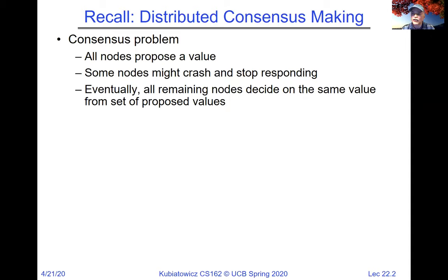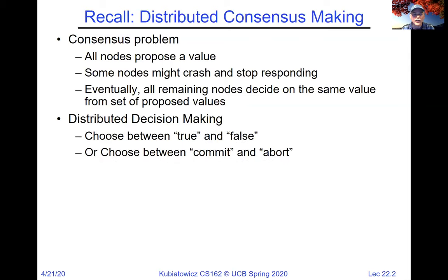The key thing that makes this difficult is the fact that nodes might crash and stop responding and then come back. We want to make sure everybody still does the same thing. Distributed decision-making is the notion of all nodes choosing between true and false, or commit and abort. It's going to be atomic in the sense that all of them will decide on true, or all of them will decide on false, but we'll never get a mixed grouping.